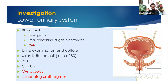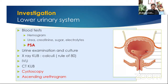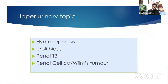Ascending urethrogram: a small tube is put into the urethra, contrast is injected, and you visualize the membranous, prostatic, and penile parts of the urethra. Wherever there is a stricture or narrowing you'll be able to find it. Now let's go on — about five minutes for each topic.